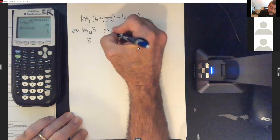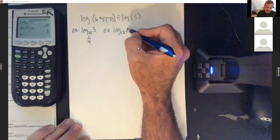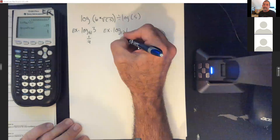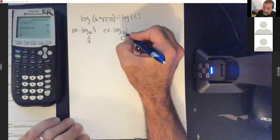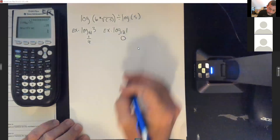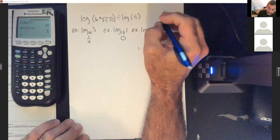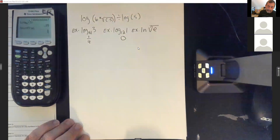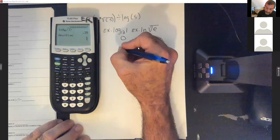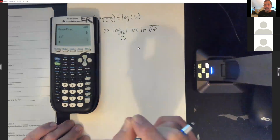What about log base 12 of 1? What exponent would you raise 12 to in order to get 1? That would always be zero. No matter what the base is, if the result is 1, that exponent will be zero. Because 12 to the zero power equals 1 — any number raised to the zero power gives you 1.